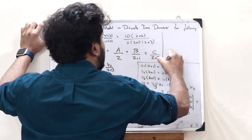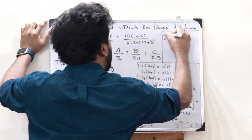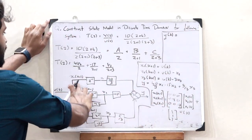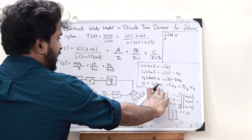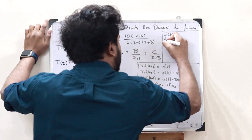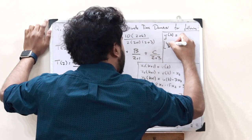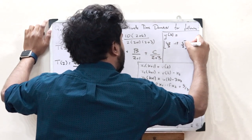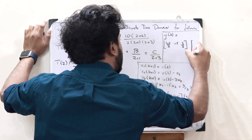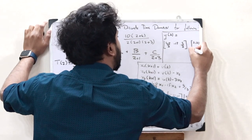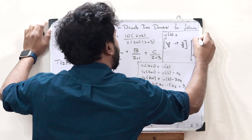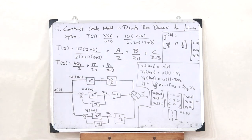The output equation is Y(K) = [40/3, −15, 5/3] multiplied by [X1(K), X2(K), X3(K)]ᵀ. This is the output equation for this state model.